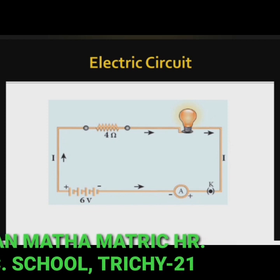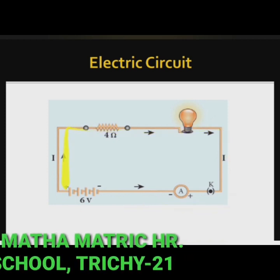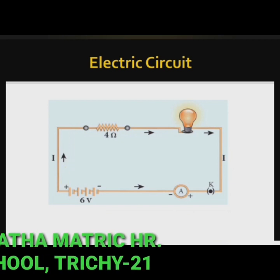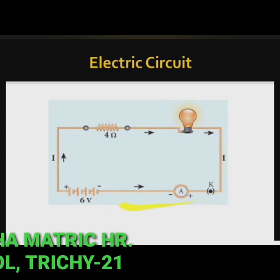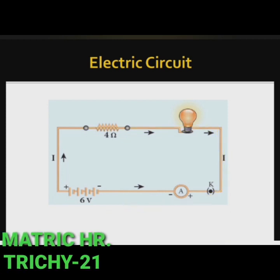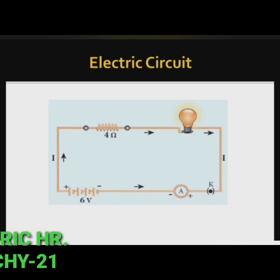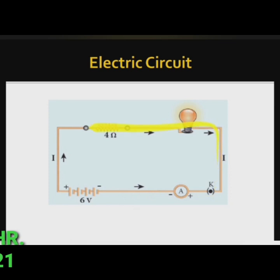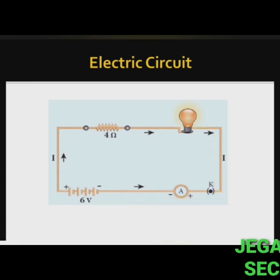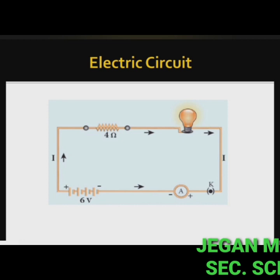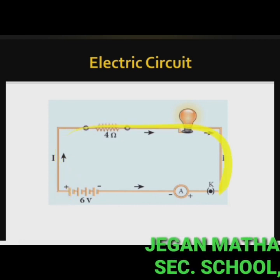The direction of electrons is from negative to positive terminal, but by convention, the direction of current is opposite to the direction of flow of electrons — that is, from positive terminal to negative terminal. So the direction of electric current is taken as the direction of flow of positive charge, or opposite to the direction of flow of electrons. Thus, electric current passes in the circuit from the positive terminal to the negative terminal.